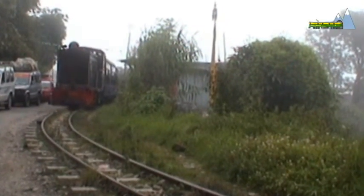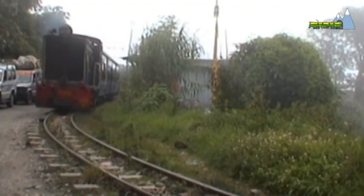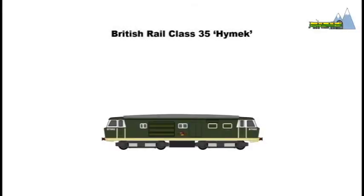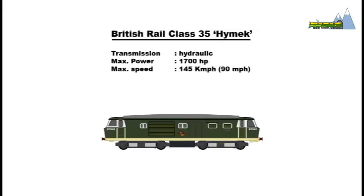While most diesel hydraulic locomotives have modest top speeds of around 50 kilometers per hour, locomotives such as this British Rail Class 35 Hymek had a top speed of 145 kilometers per hour and could compete with many modern diesel electric locomotives in terms of speed.